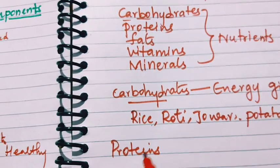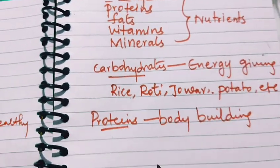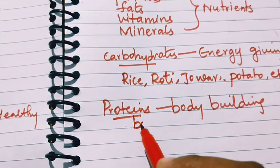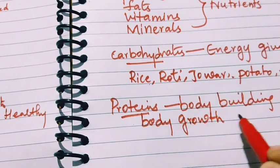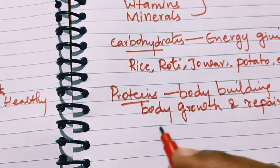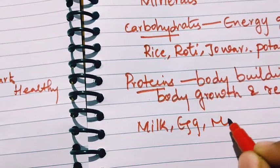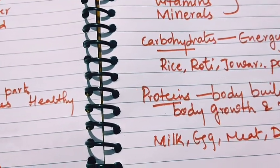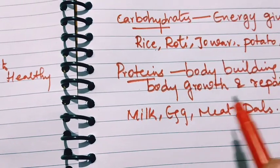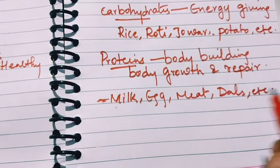Next is proteins. Proteins are body-building — they build up the body. Proteins help in body growth and repair, hence they are known as body-building. We obtain proteins from milk, eggs, meat, dals, different types of pulses, and fish.